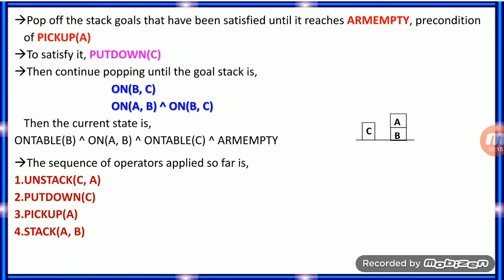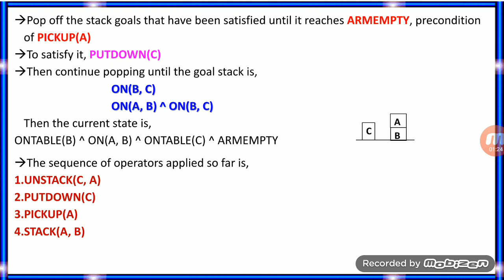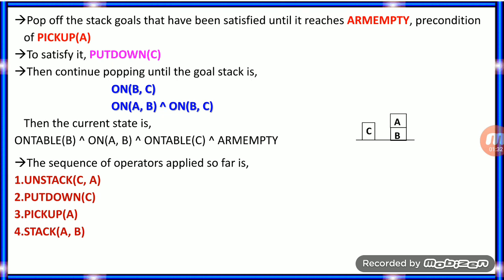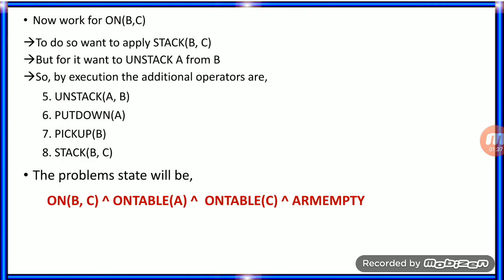To achieve pickup(A), you have to execute put_down(C), then pop up the goal stack. The current state will look like: on_table(B), on(A, B), on_table(C), and arm empty. The sequence of operators applied so far is: unstack(C, A), put_down(C), pickup(A), and stack(A, B).